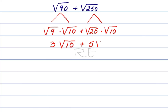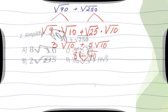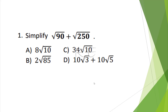Square root of 25 is 5, so we have 5 square root of 10. That gives us 3 square root of 10 plus 5 square root of 10. Since these are like radicals, we add the coefficients: 3 plus 5 equals 8, giving us 8 square root of 10.